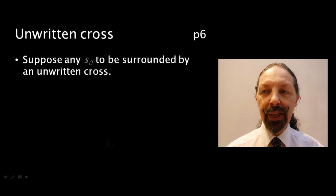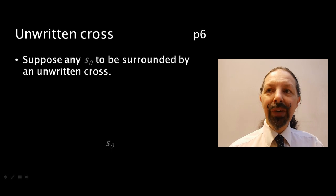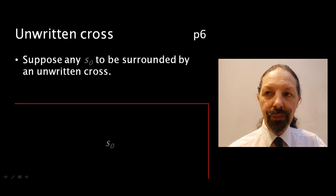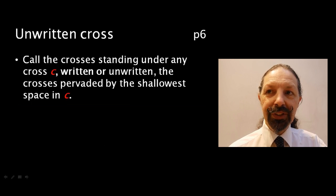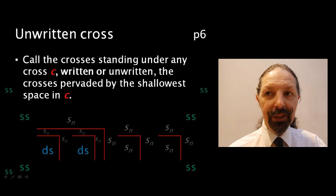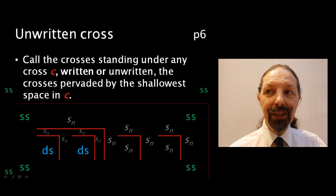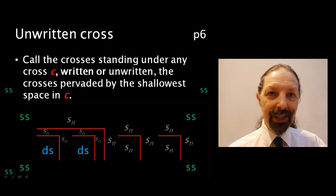Now, suppose any space zero is surrounded by an unwritten cross. All the crosses standing under any cross C, written or unwritten, the cross is pervaded by the shallowest space in C. That means space SS is both outside and inside the unwritten cross. It's everywhere. And then the pervasive space is everywhere.